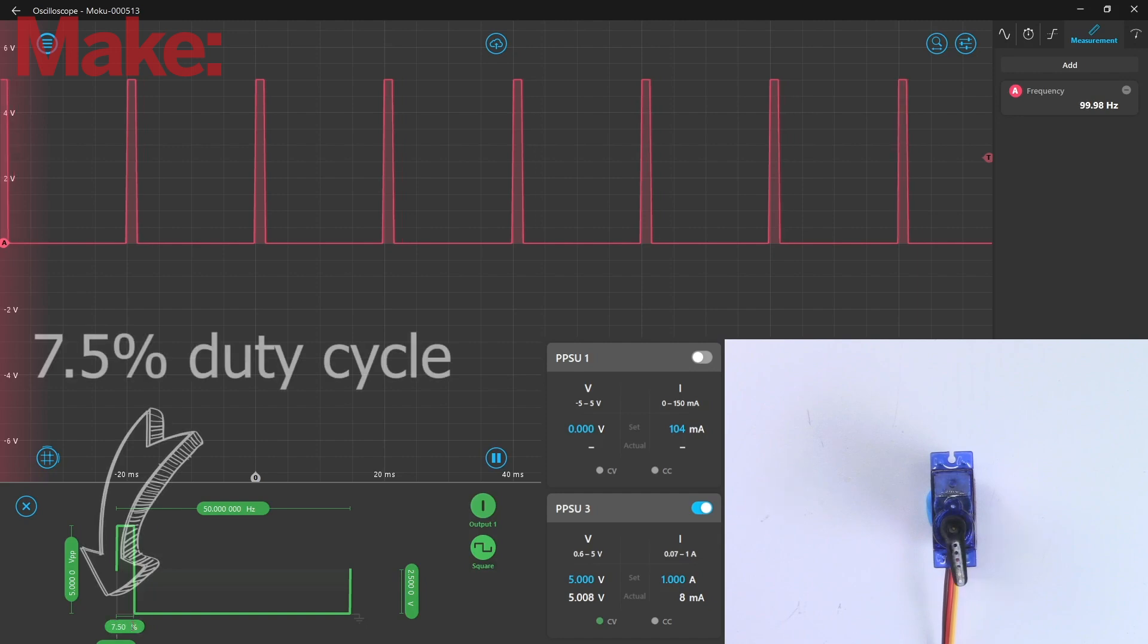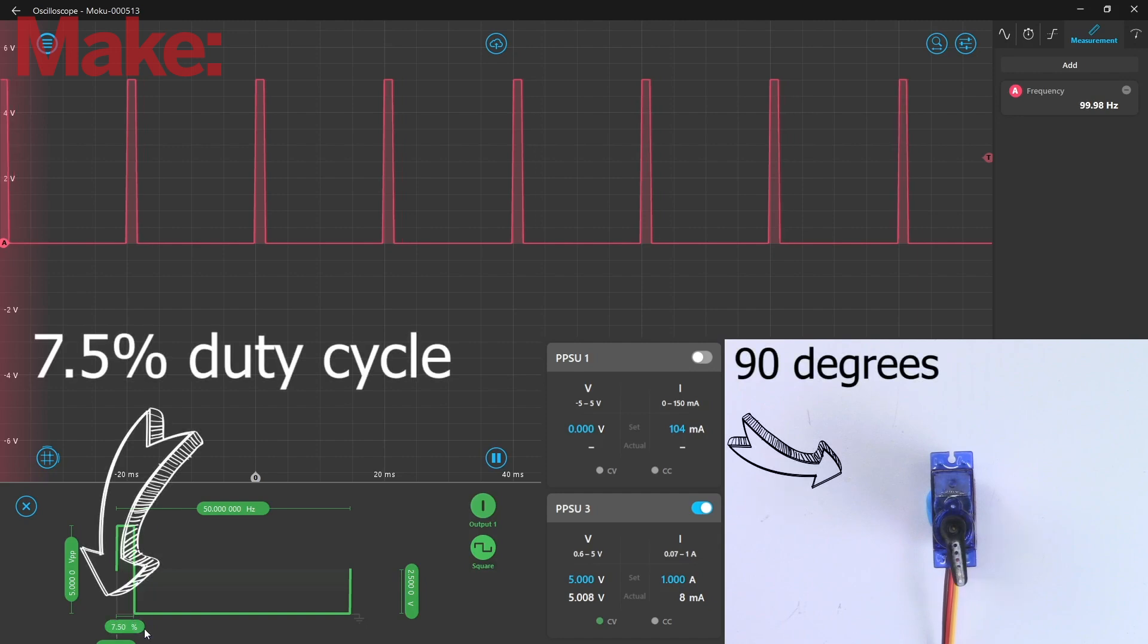The width of the pulse corresponds to the position of the servo. A 1.5 millisecond pulse, or 7.5 percent duty cycle, is the center or neutral position, which is at 90 degrees.